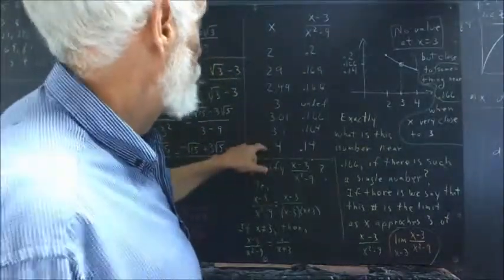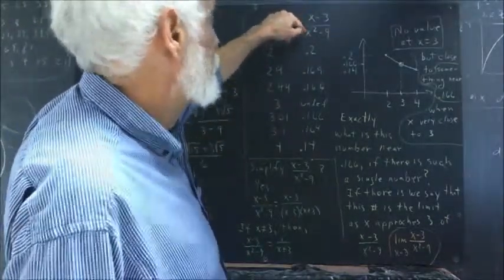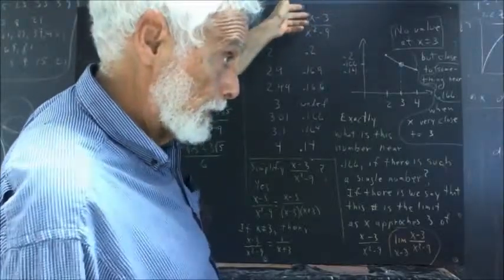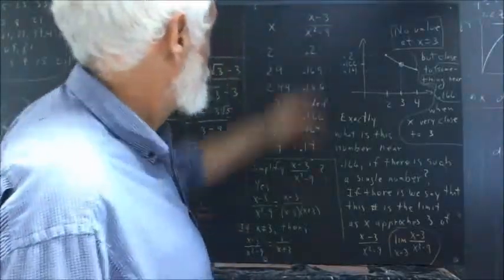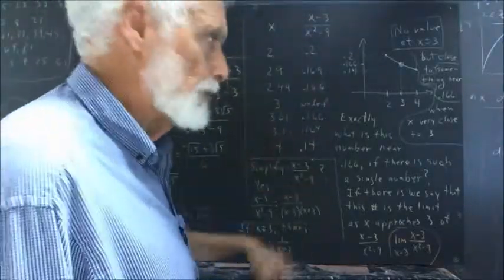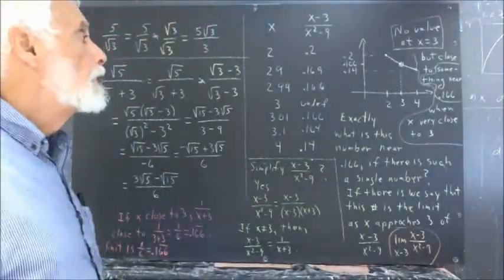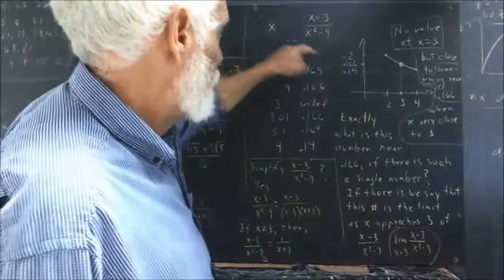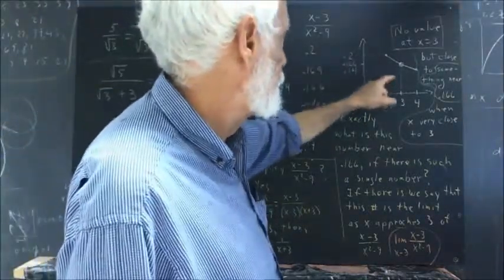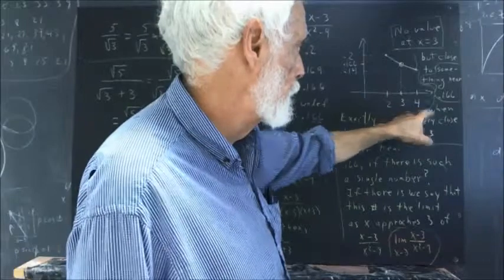And if x equals 4, we get 1 over 4 squared is 16, 16 minus 9 is 7. So we get 1 seventh, which is approximately 0.14. The values of this function appear to go from 0.2 to 0.14 as x goes from 2 to 4.